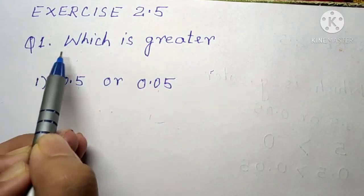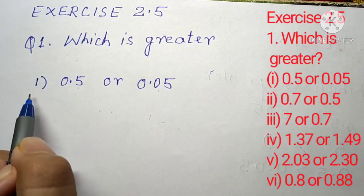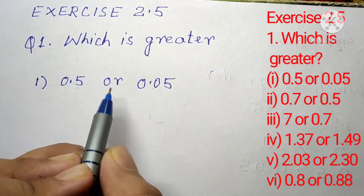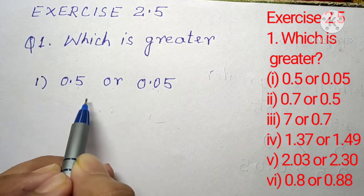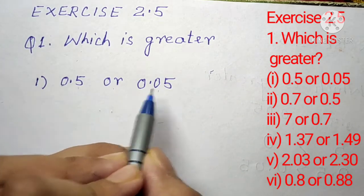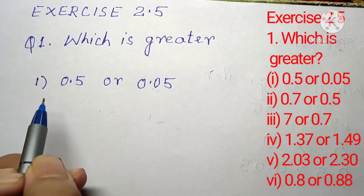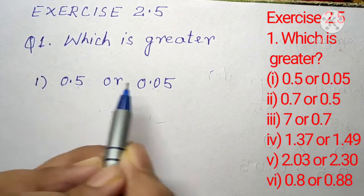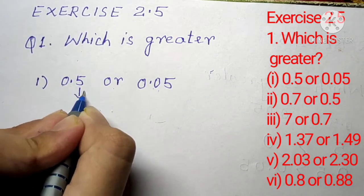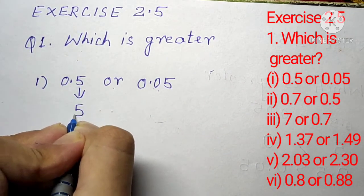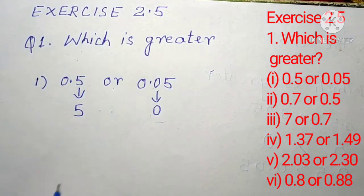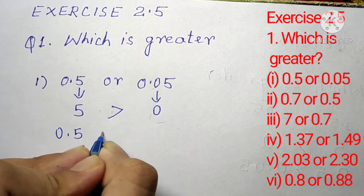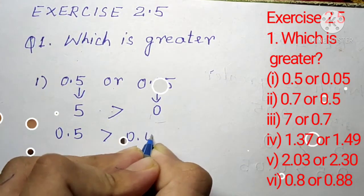Exercise 2.5, question number 1, part 1: which is greater, 0.5 or 0.05? First we compare by seeing the left hand side of the decimal point — both numbers have 0 on the left, so we compare the right hand side. Starting from the 10th place, this number has 5 and this number has 0. Since 5 is greater than 0, 0.5 is greater than 0.05.